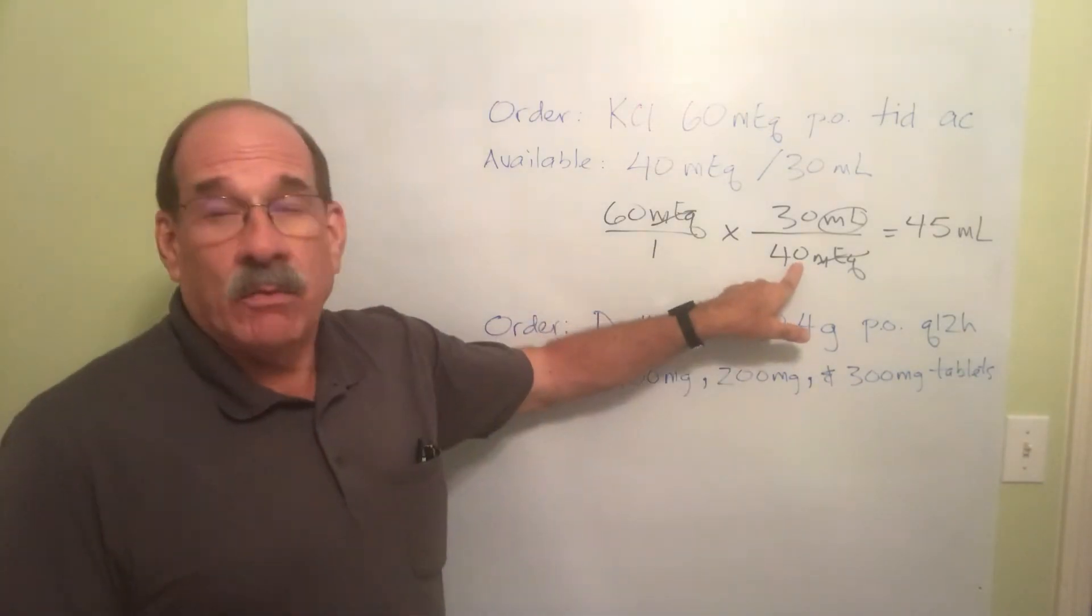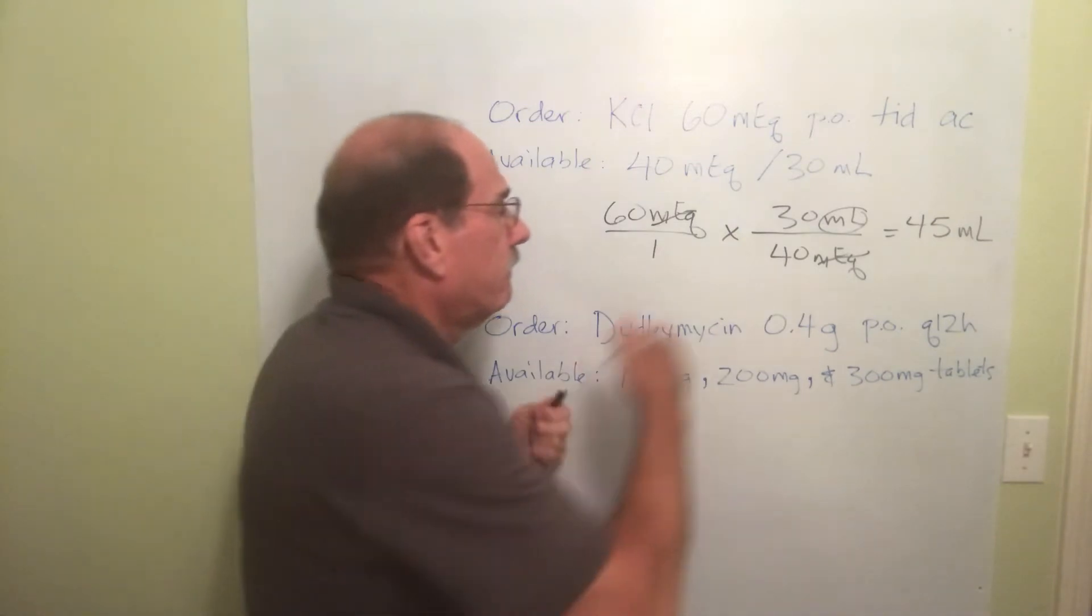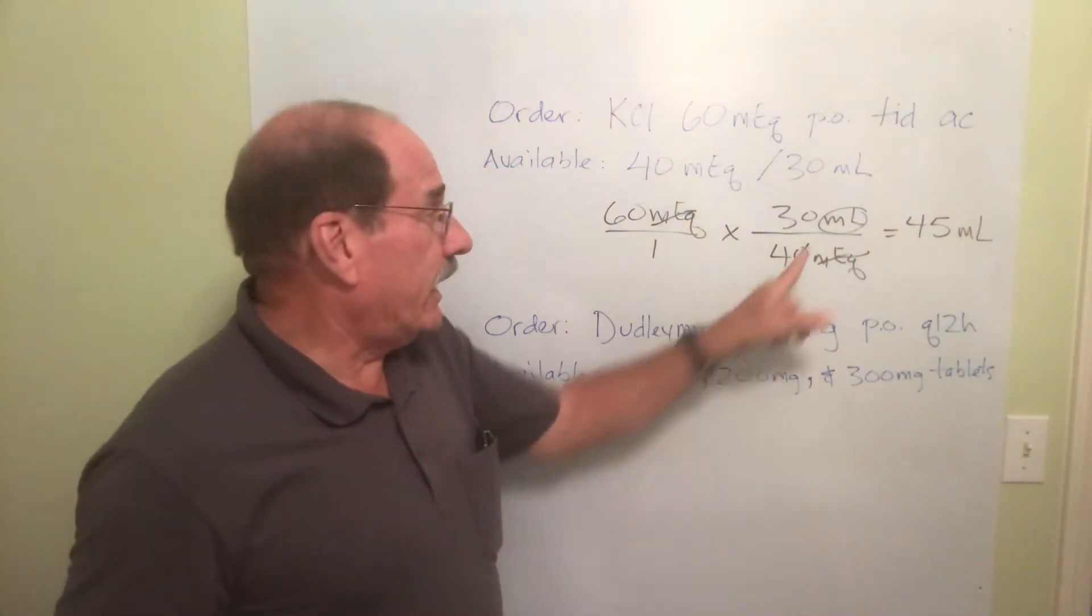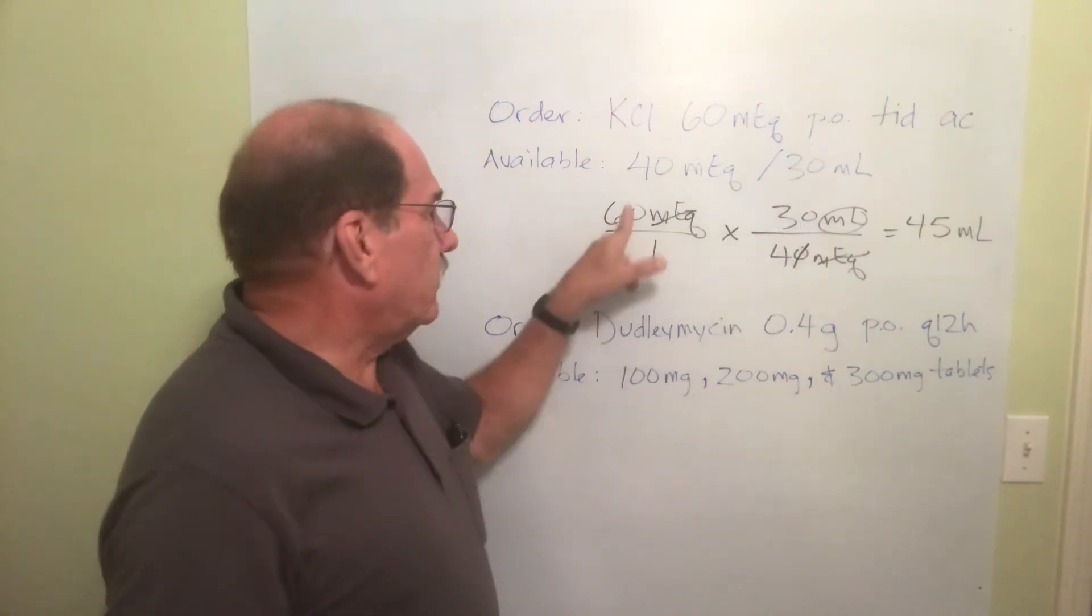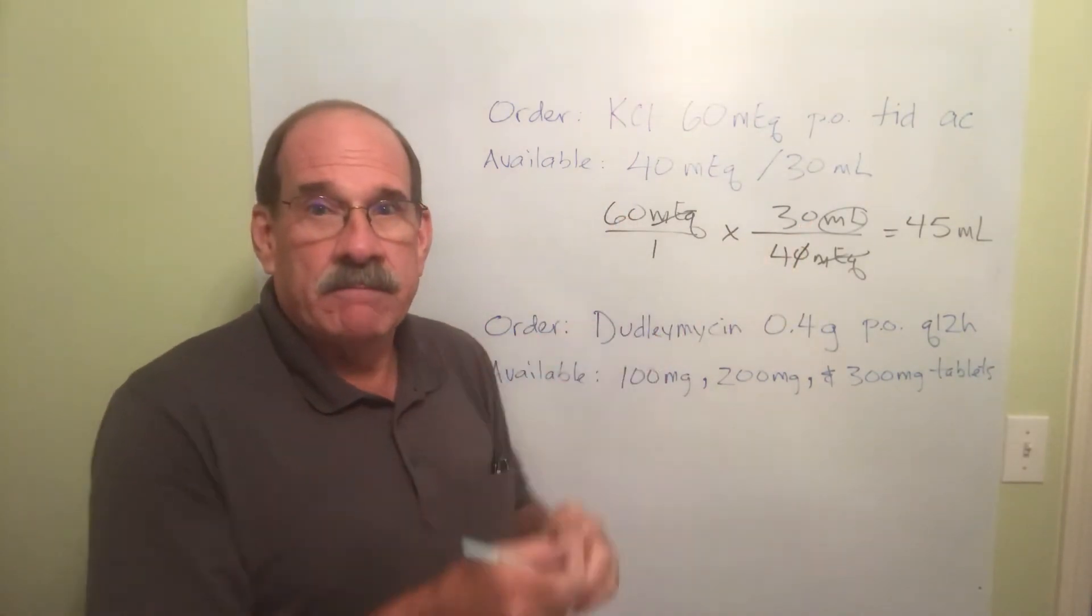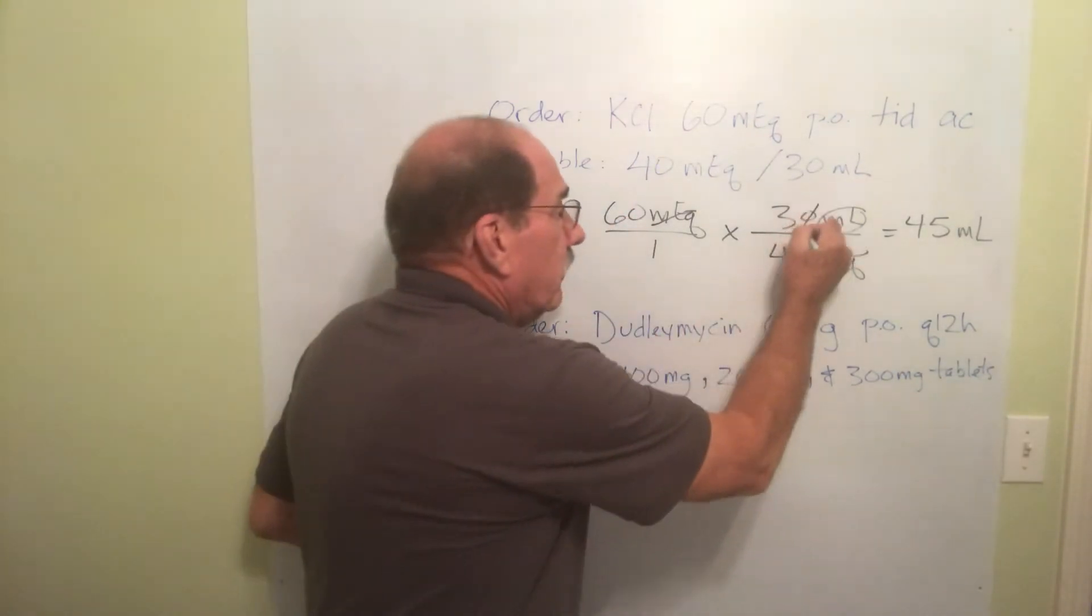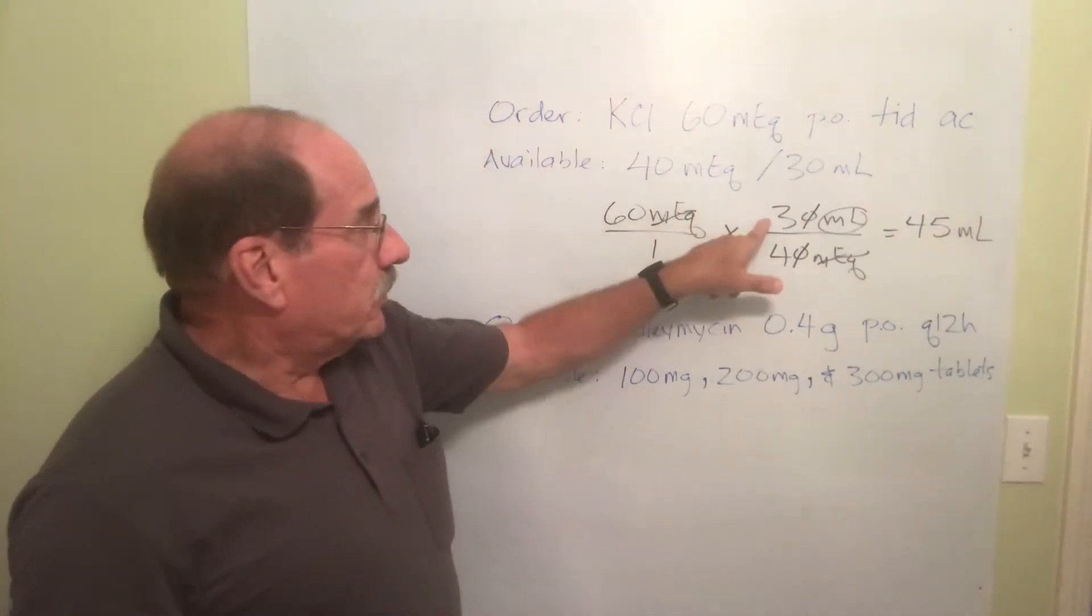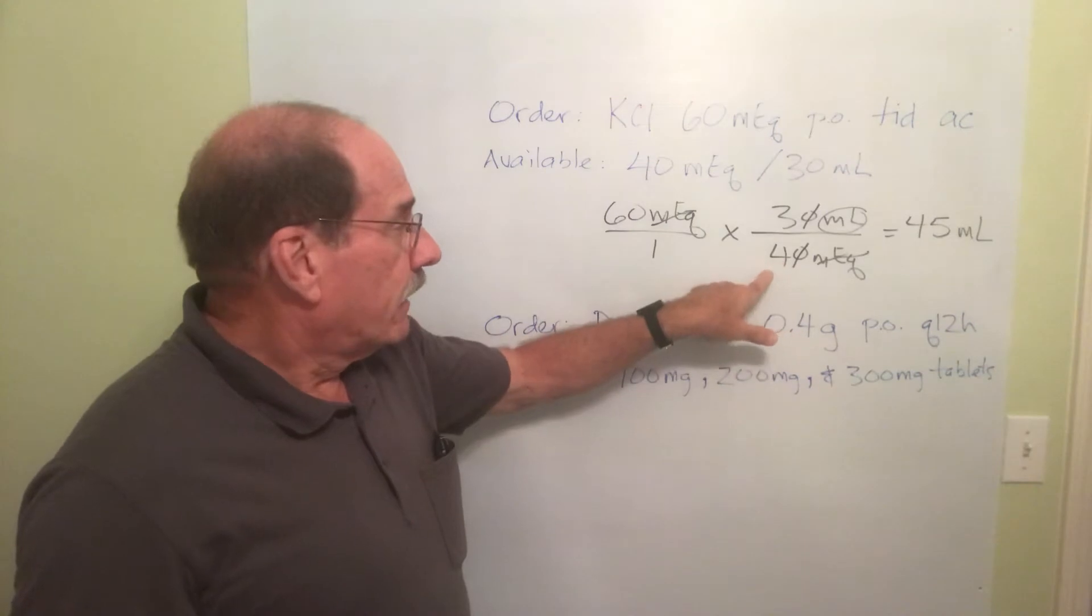Well, which one do I cancel on top? Doesn't matter. If I cancel this one that's fine, or cancel it, but only one or the other, you see. So I could just cancel this. What's left? 60 times 3 divided by 4.